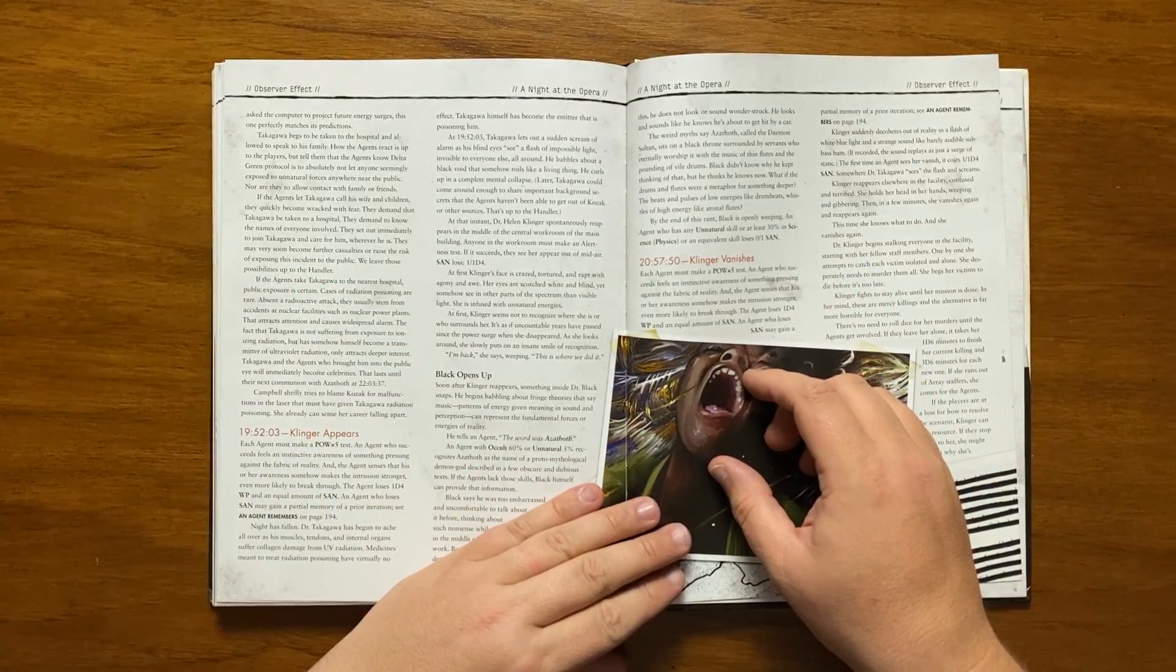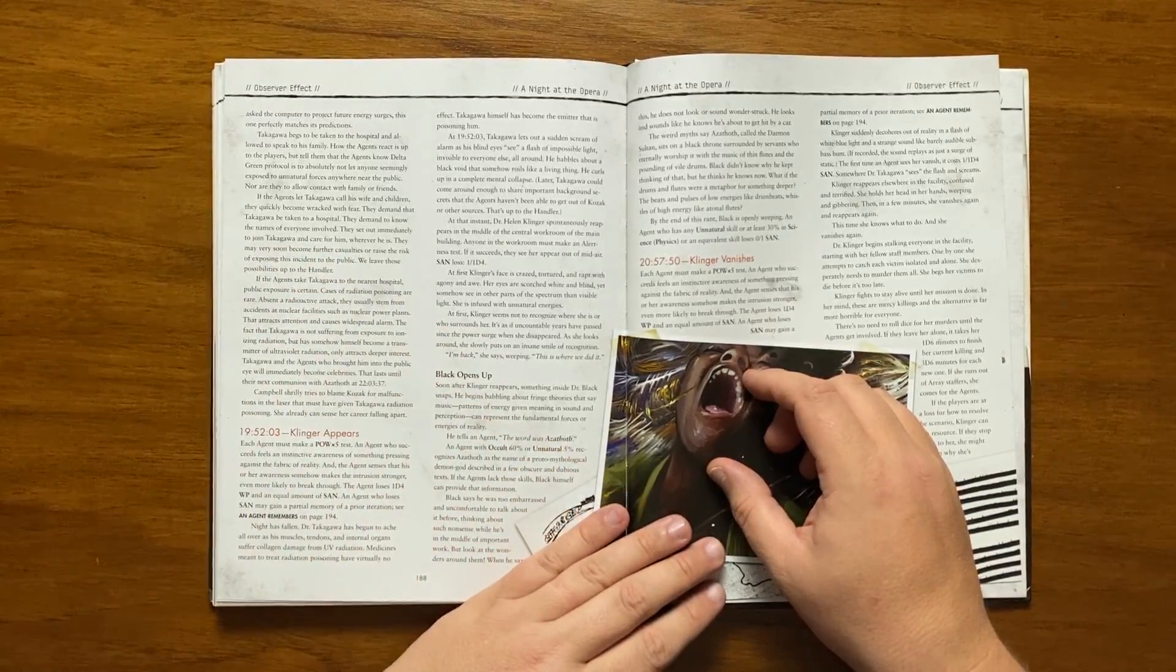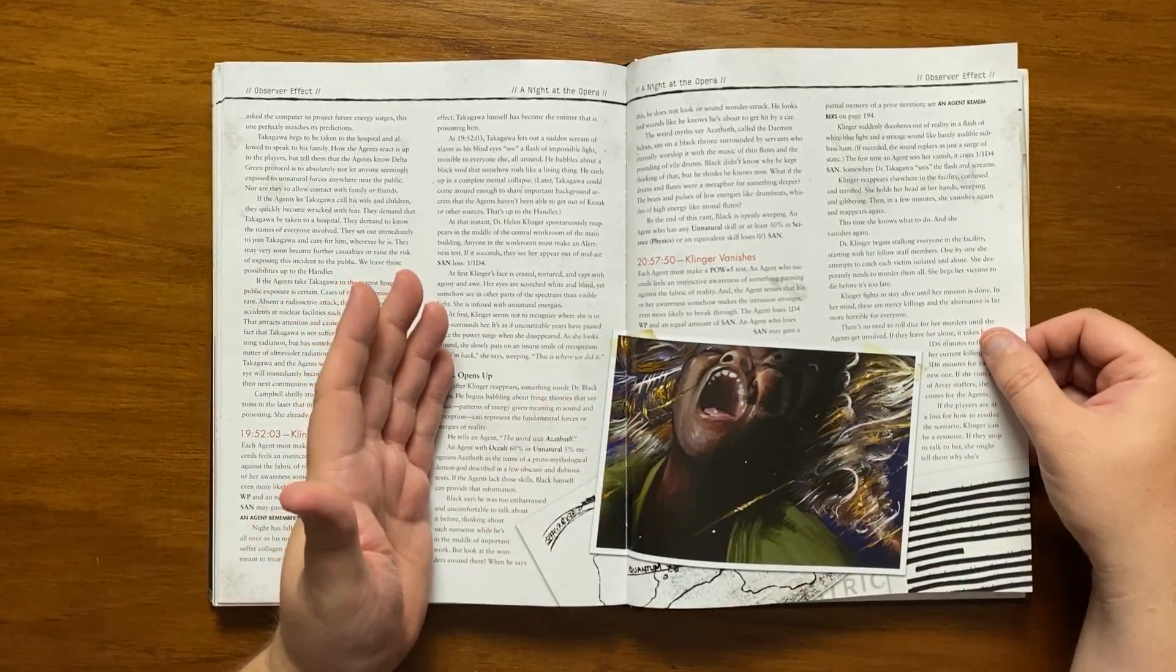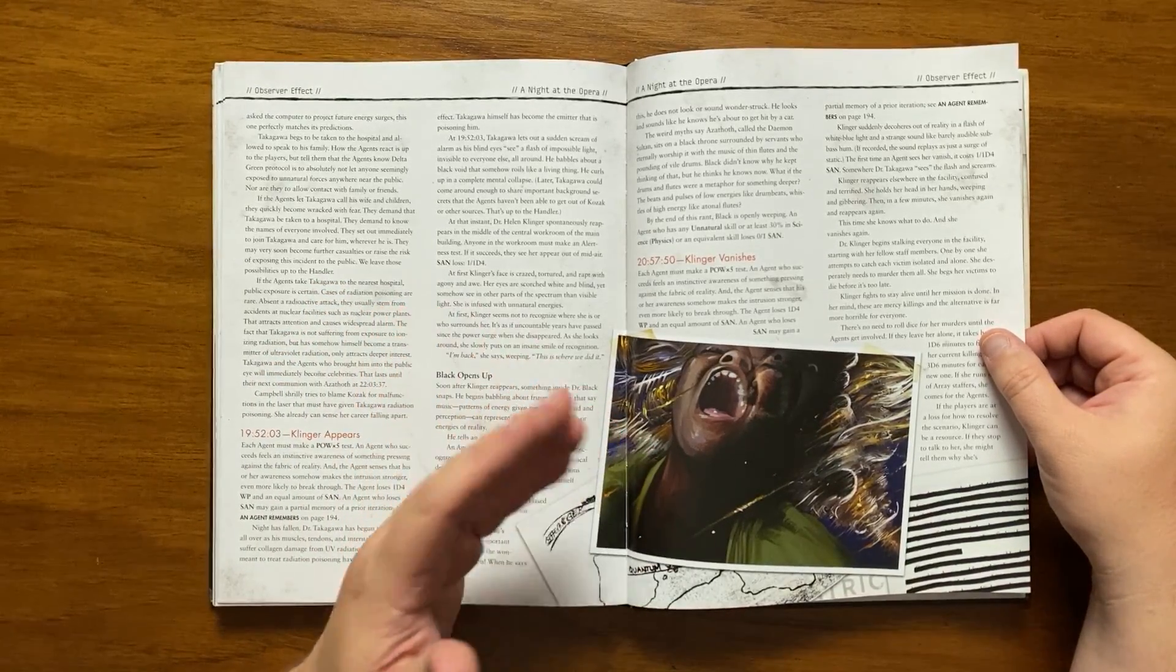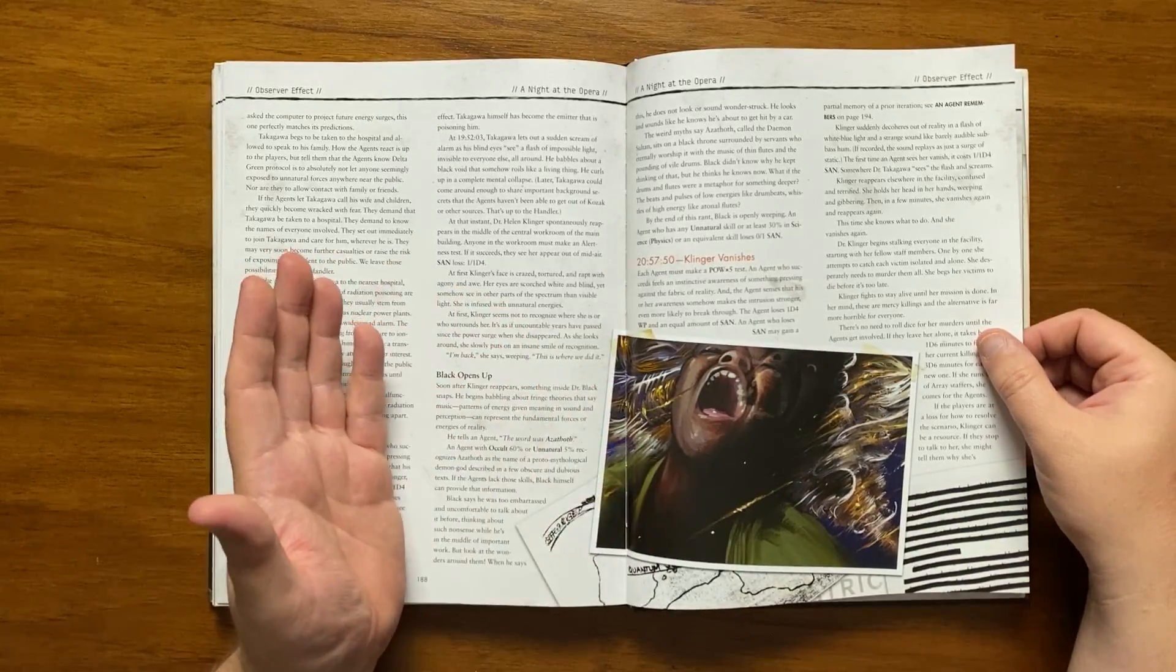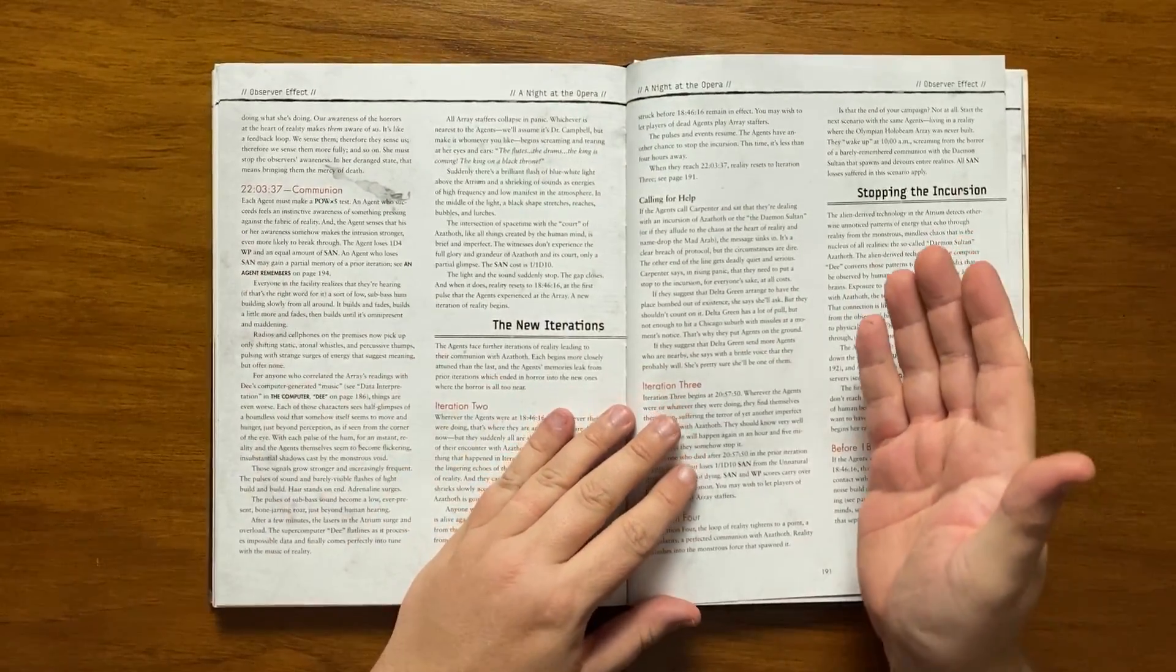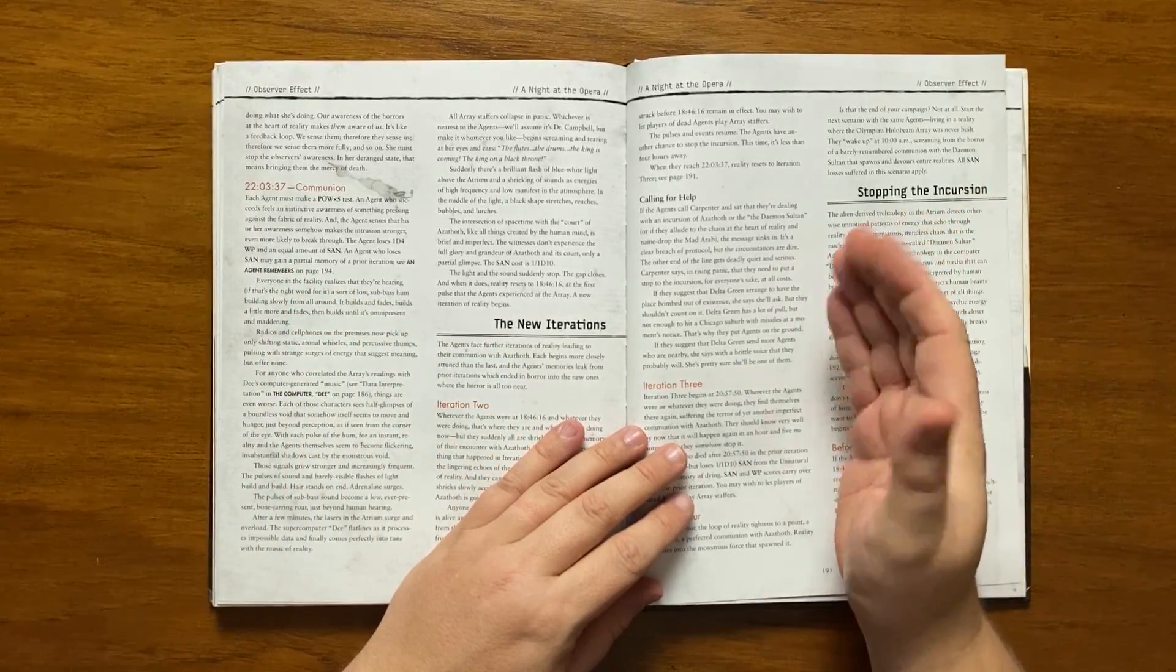At 20.57, Klinger vanishes in a flash of blue white light. Again, the power times fire roll is needed with the same feeling as before and the sand loss continues and Takagawa will see the flash and scream. Klinger will reappear in the facility somewhere, confused and terrified and then a few minutes later vanishes again. The next time she returns she begins stalking everyone in the facility, starting with the staff here. Anyone she catches alone she will try to murder, begging them to die before it's too late. She fights to stay alive until she has done what she needs to do as she considers these mercy killings. If the agents try to talk to Klinger, she will advise them that our awareness of the horrors beyond the veil of reality makes them aware of us, and that there is a feedback loop that needs to be stopped by killing everyone here.